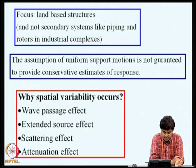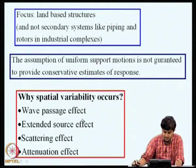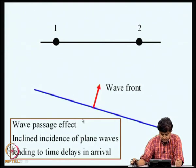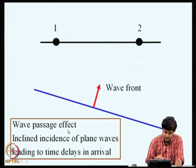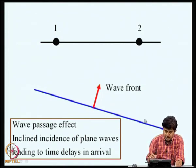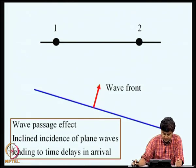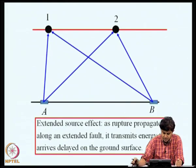In the last lecture, we also saw why spatial variability occurs and we considered four different effects. The first one was the wave passage effect, where a wave front reaches two recording stations at different times because the angle of incidence is such that the wave front is inclined to the plane of the ground. That leads to delays in arrival times.